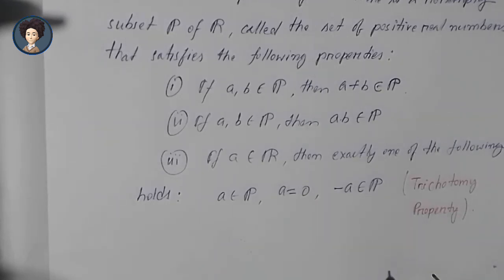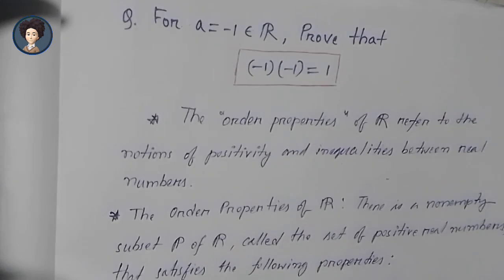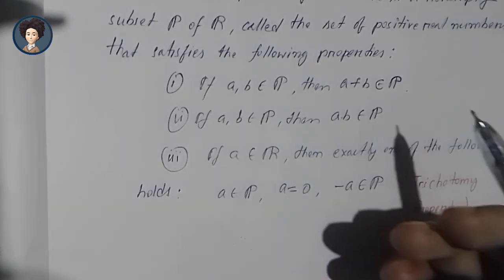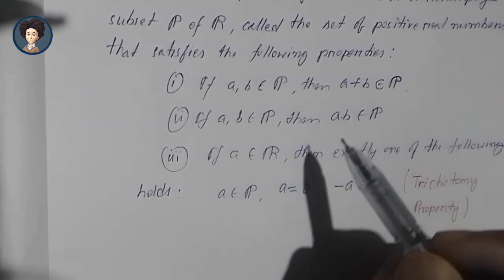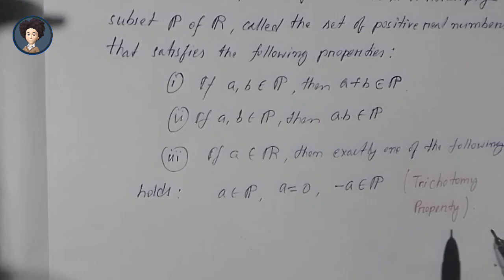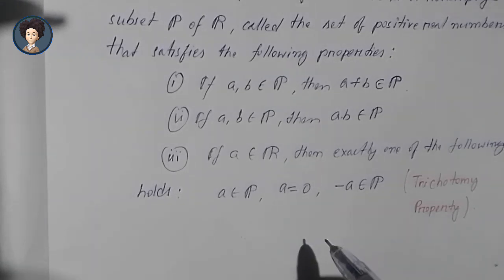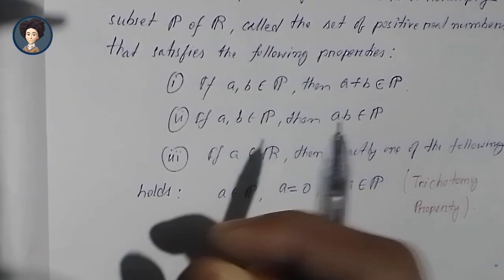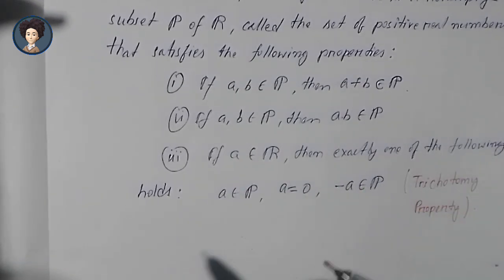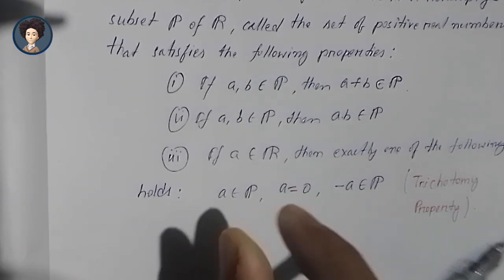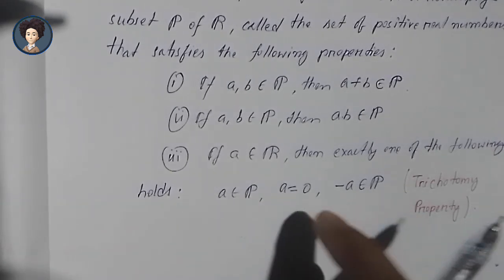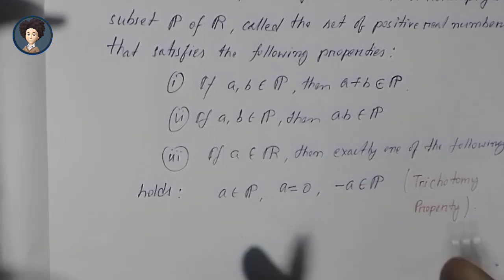The third condition is called the trichotomy property. The first two properties give us compatibility of order with addition and multiplication. The trichotomy property states that the negative and positive real numbers have no common elements, and that ℝ consists of three disjoint sets: P, the negatives, and zero.